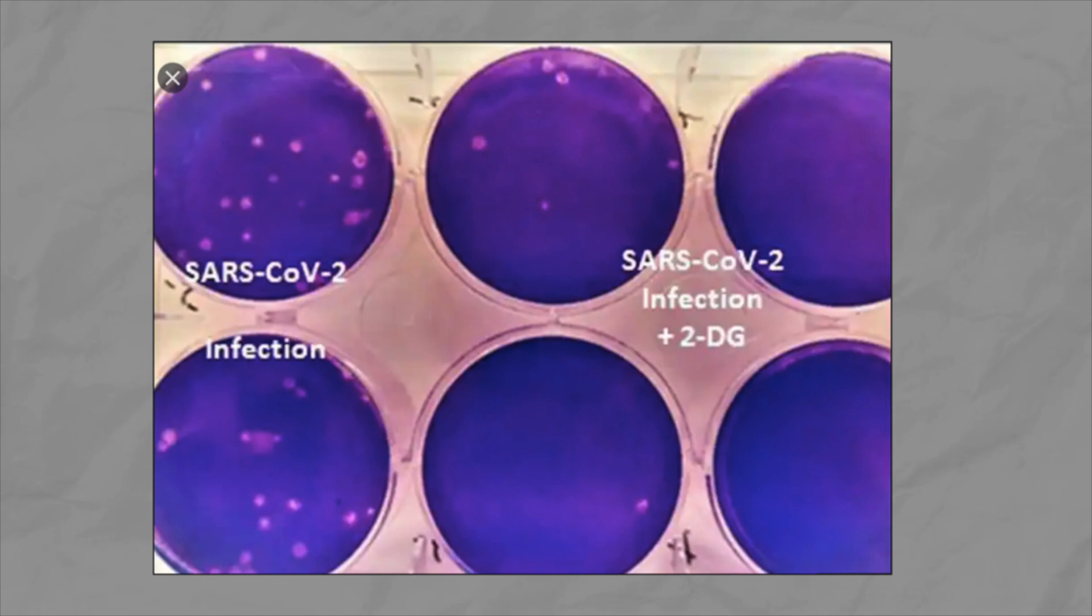Here in this DRDO published image, you can see the comparison between virus multiplication in COVID-19 infection. The virus multiplication in patients treated with 2-DG is very less. On a similar mechanism, this drug was under clinical trial for cancer treatment along with chemotherapy.